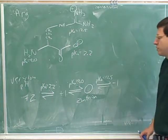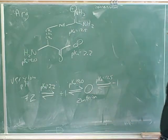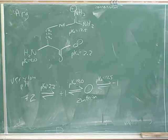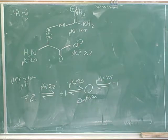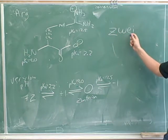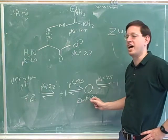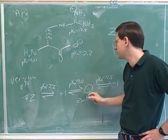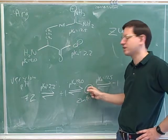The Zwitterion is the form with zero net charge when two separate charges cancel each other out. By the way, Zwitterion is German for 'two ions.' That's how we get the zero net charge — there are two separate ionic centers that cancel each other out. So Zwitterion just means two separate ionic centers that cancel each other out to give a net charge of zero.